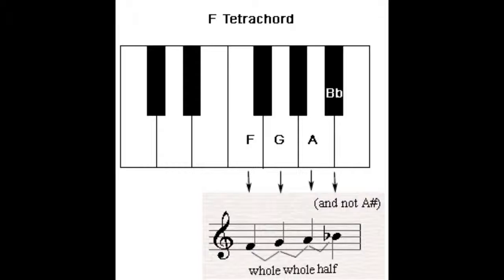The term tetrachord derives from ancient Greek music theory, where it signified a segment of the greater and lesser perfect systems bounded by unmovable notes. The notes between these were movable. It literally means four strings.